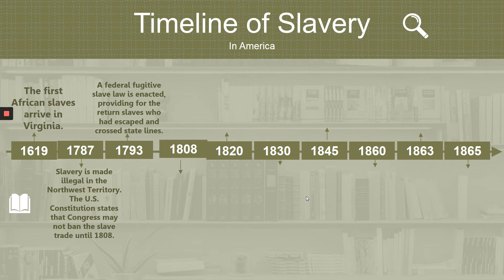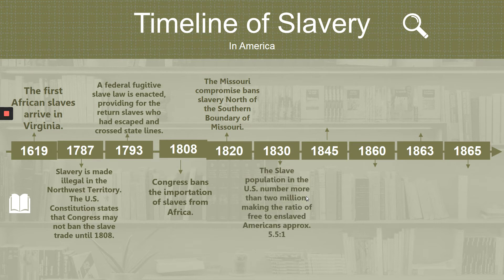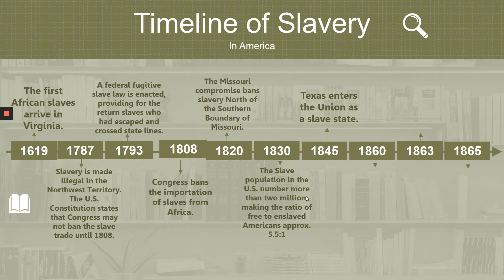In 1808, Congress banned the importation of slaves from Africa. In 1820, the Missouri Compromise prohibited slavery north of the southern boundary of Missouri. In 1830, the slave population in the US numbered more than 2 million, reflecting the ratio of free to enslaved Americans. In 1845, Texas entered the Union as a slave state.